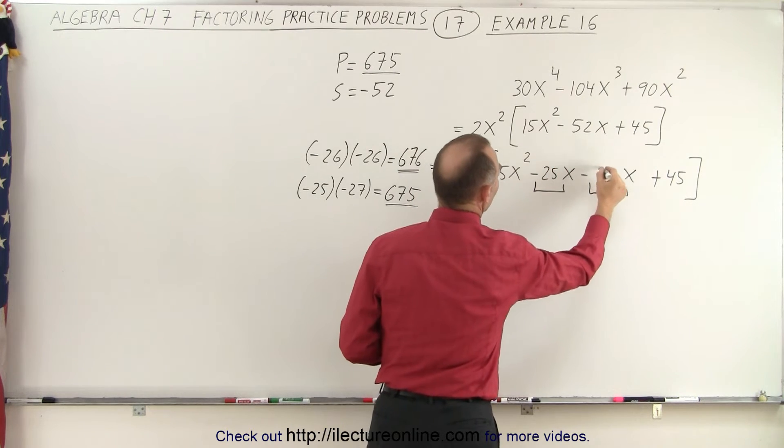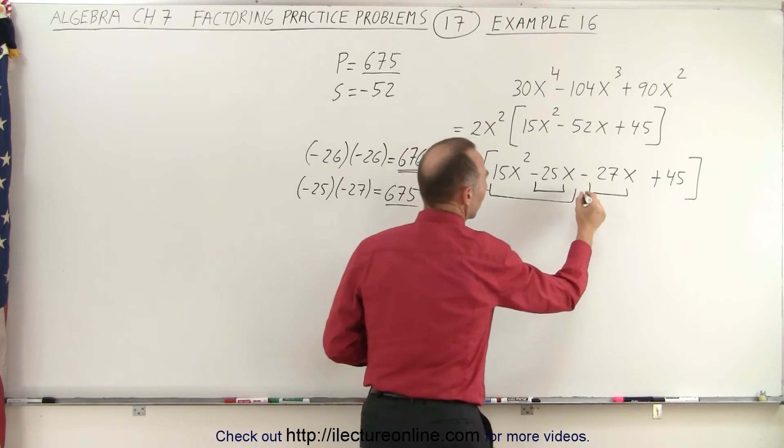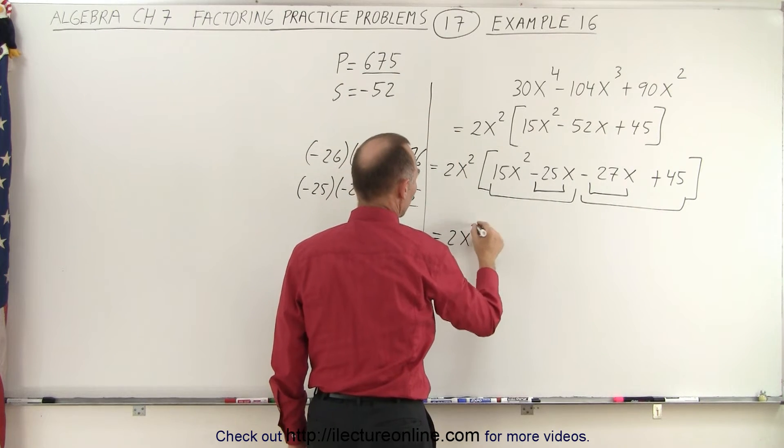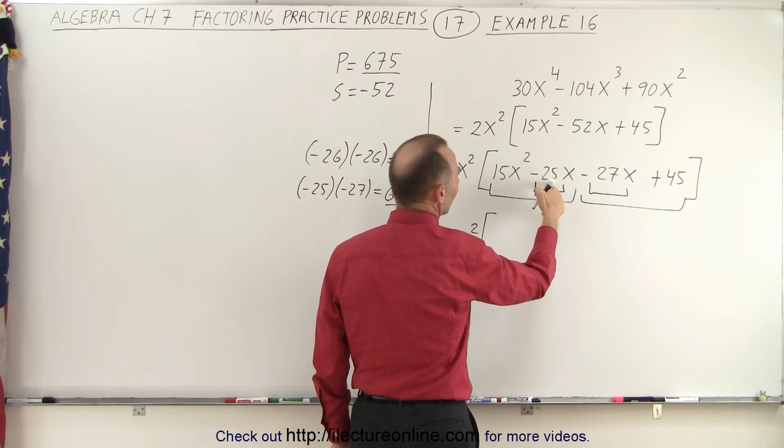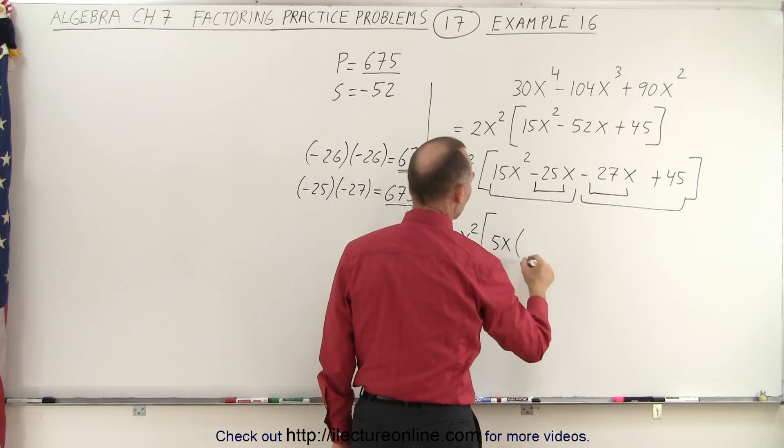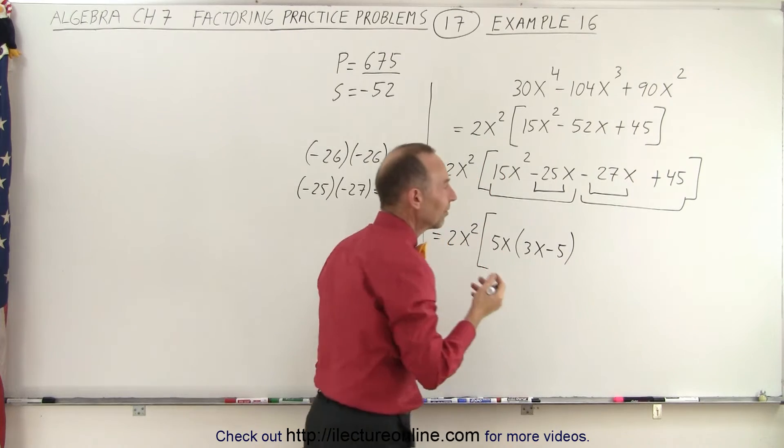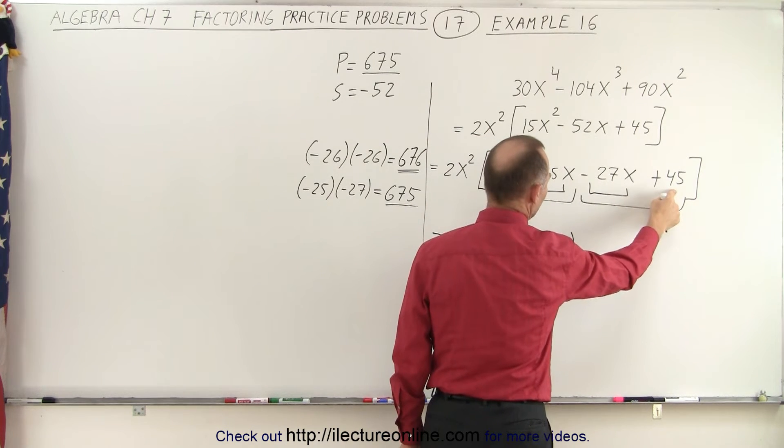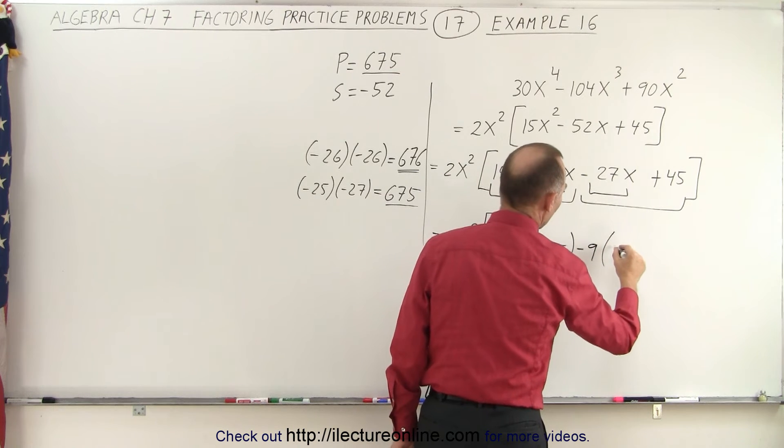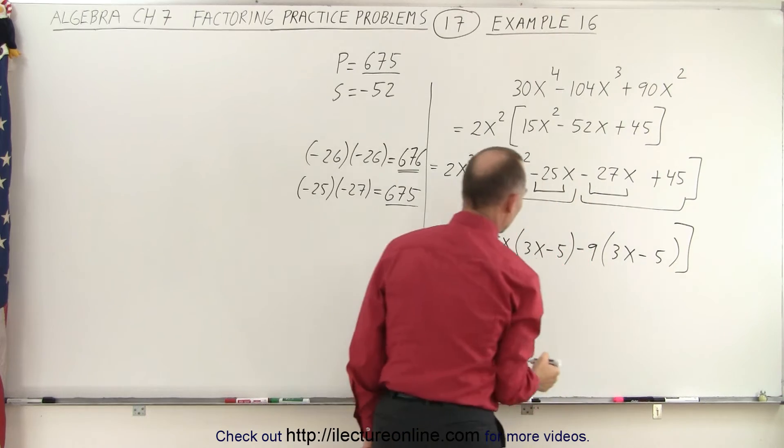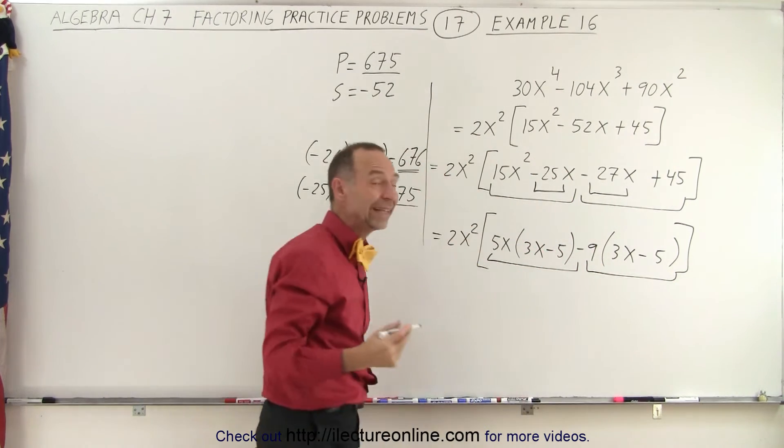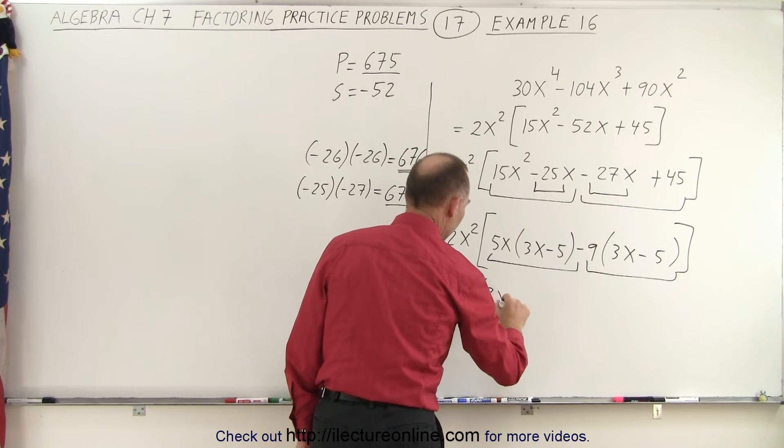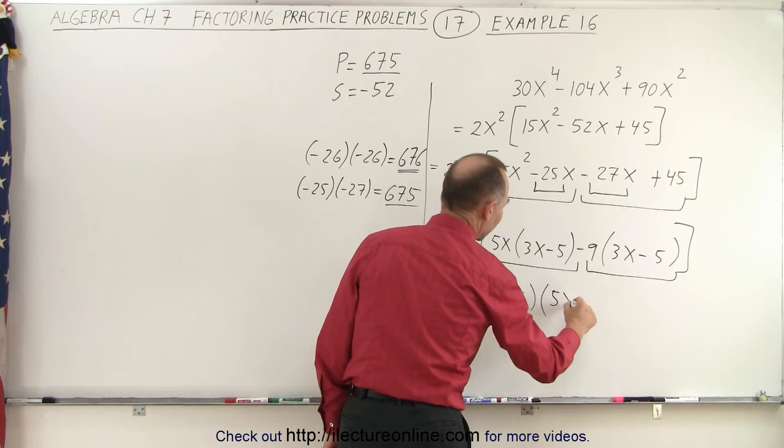So here, a minus 25 and a minus 27. Now I can go ahead and group them in groups of two terms and factor out whatever is common. So this is equal to 2x squared times. So we have 15 and 25. I can factor out a 5 and I can factor out an x, which leaves me with 3x minus 5. Over here, I can factor out a 9 because 27 is divisible by 9 and 45 is divisible by 9. And I can factor out a minus 9, which leaves me with 3x minus 5. And notice I now have two terms and each of the two terms contains a 3x minus 5, which can be factored out. So this is equal to 2x squared times 3x minus 5. And I'm left with 5x minus 9.